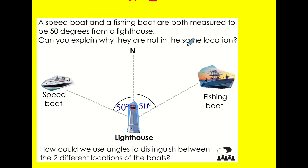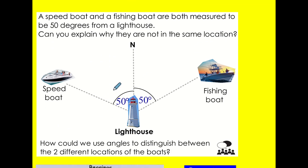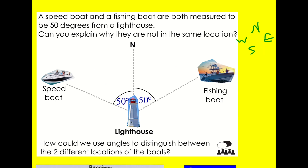Today we're going to look at a topic related to angles — hence the starter. Here's a scenario: a speedboat over here and a fishing boat, and they're both measured to be 50 degrees from the lighthouse. But can you explain why they're not in the same location? Well, one's over here and one's over here. Let's look at the north. You should try and remember north, east, south, west — 'Never eat shredded wheat' is one way. This fishing boat's over to the east, and the speedboat's over to the west, so they're clearly not in the same location.